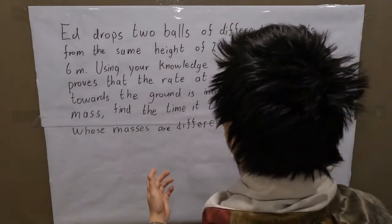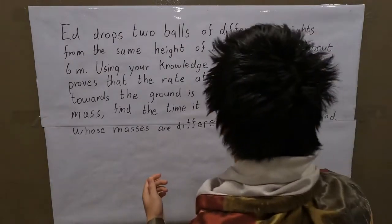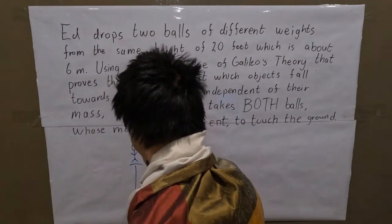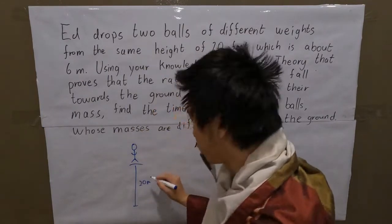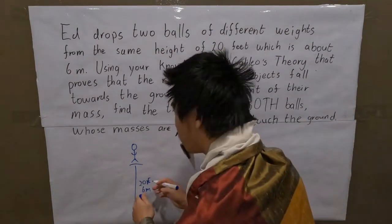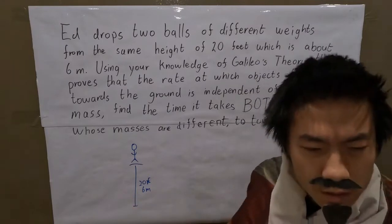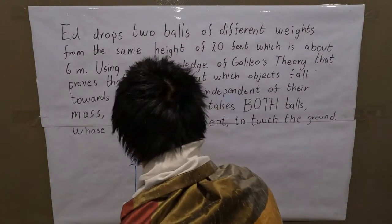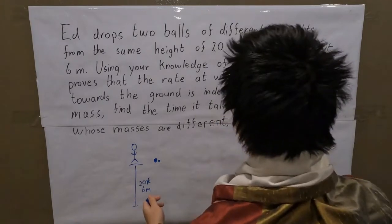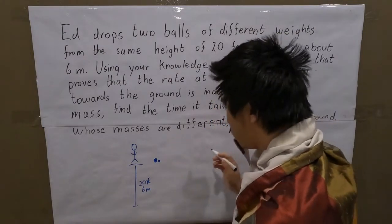The question wants us to find the time it takes for both balls to reach the ground. Ed is standing on top of a platform 20 feet from the ground, which is 6 meters. For the sake of this question I am going to use 6 meters because that is the metric system. Since the weight of the object doesn't matter, we don't need to calculate individual times for the two balls — we just calculate one time for both balls.